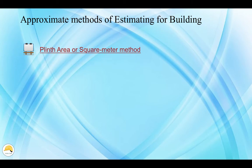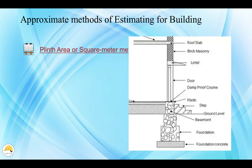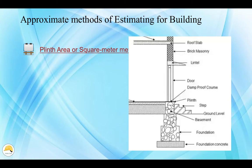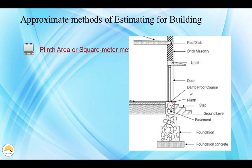This method is the plinth area method. Plinth area is the top of the basement — this is the floor level. In the plinth area, you can include and exclude. You can exclude the plinth offset. This covers the area of loft, balcony, domes, and tower. There are some things like stair cover, internal shaft, and landing that we can calculate in the plinth area.